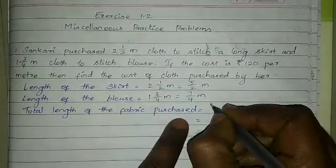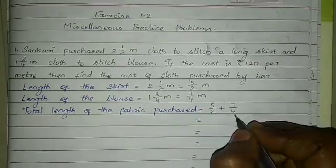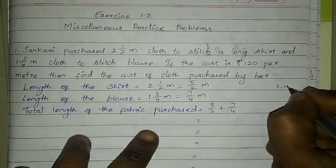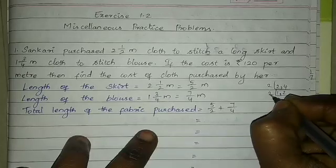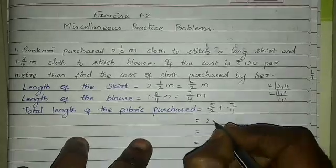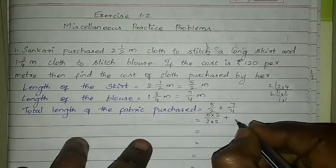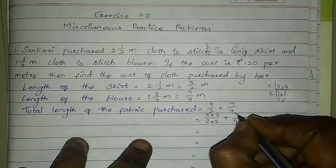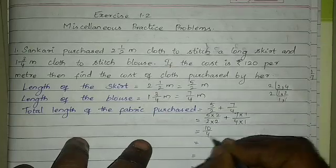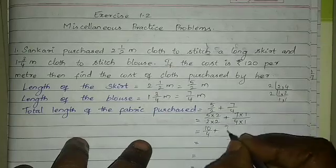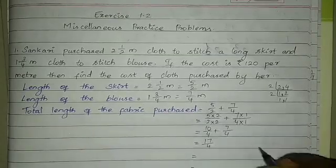Total length equals 5/2 plus 7/4. These are unlike fractions, so we need to find the LCM. LCM of 2 and 4: 2 times 1, 2 times 2 gives 4. So the LCM is 4. We then get 10/4 plus 7/4, which equals 17/4.